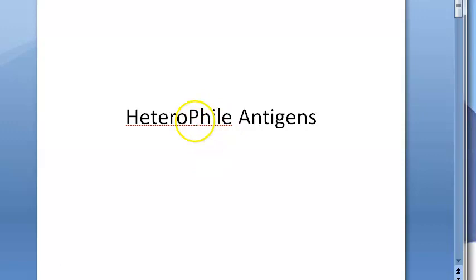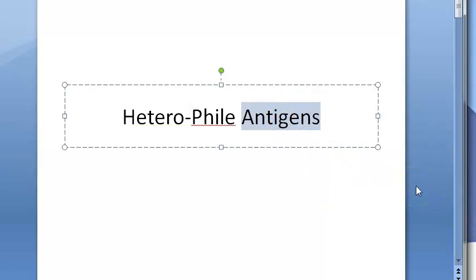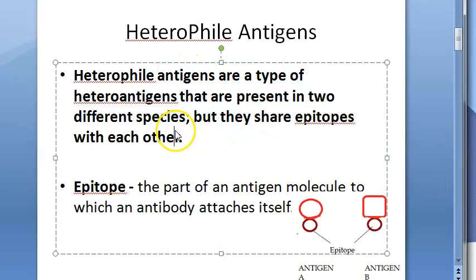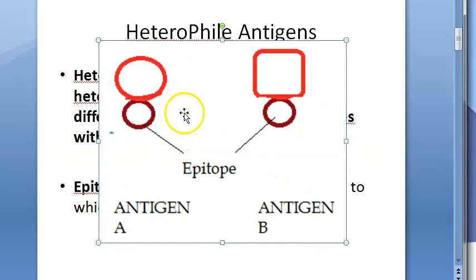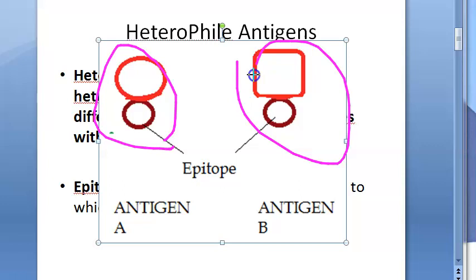In this video we want to look at heterophile antigens. Heterophile antigens are a type of hetero antigens that are present in two different species. In two different species you have two different types of antigens, but they share the same epitopes. Look at this diagram — this is an antigen and this is an antigen, two antigens in two different species. These hetero antigens become heterophile antigens.